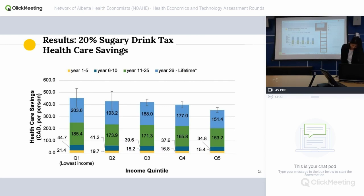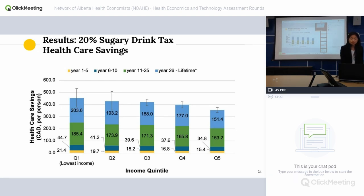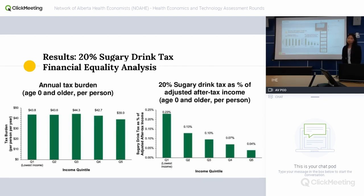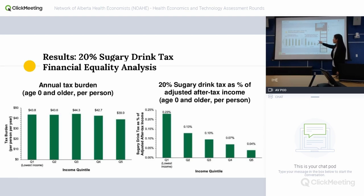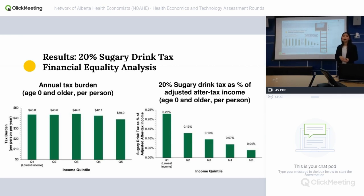For healthcare cost savings, the tax can save $10.7 billion over a lifetime horizon, with the lowest income quintile showing more healthcare cost savings from a healthcare system perspective. In terms of tax burden, the average annual tax burden per person is around $43, with the middle income quintile having the highest absolute burden at $44.20. However, when we account for their income, we can see that the lowest income quintile pays the highest proportion of their income for this tax. So we can see that it is a regressive tax.